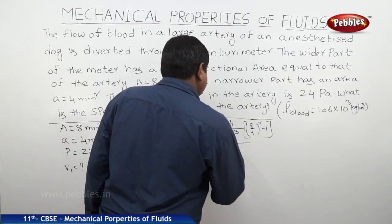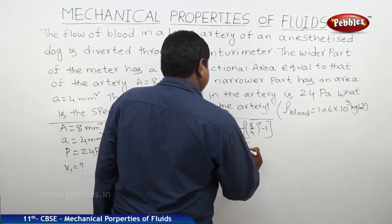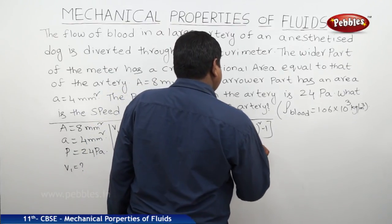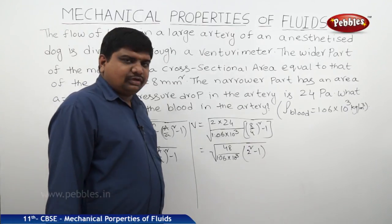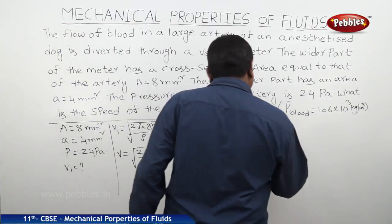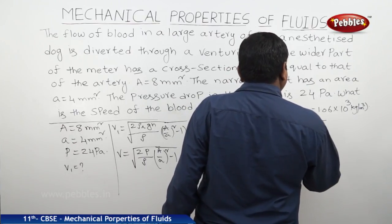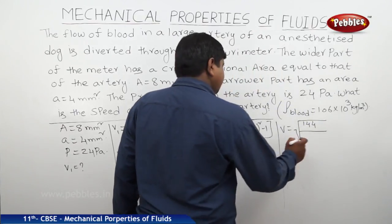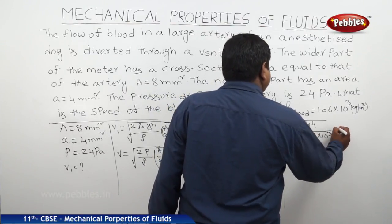Therefore, it is square root of 48 by 1.06 × 10³ times 2² minus 1. 2² is 4. 4 minus 1 is 3. 3 times 48 is 144 by 1.06 × 10³.